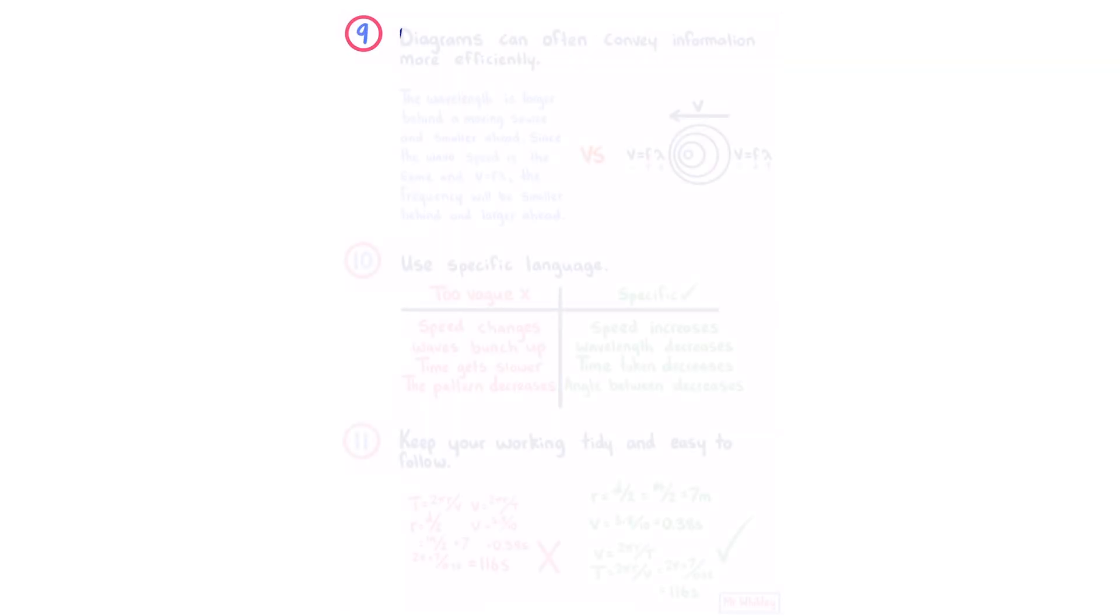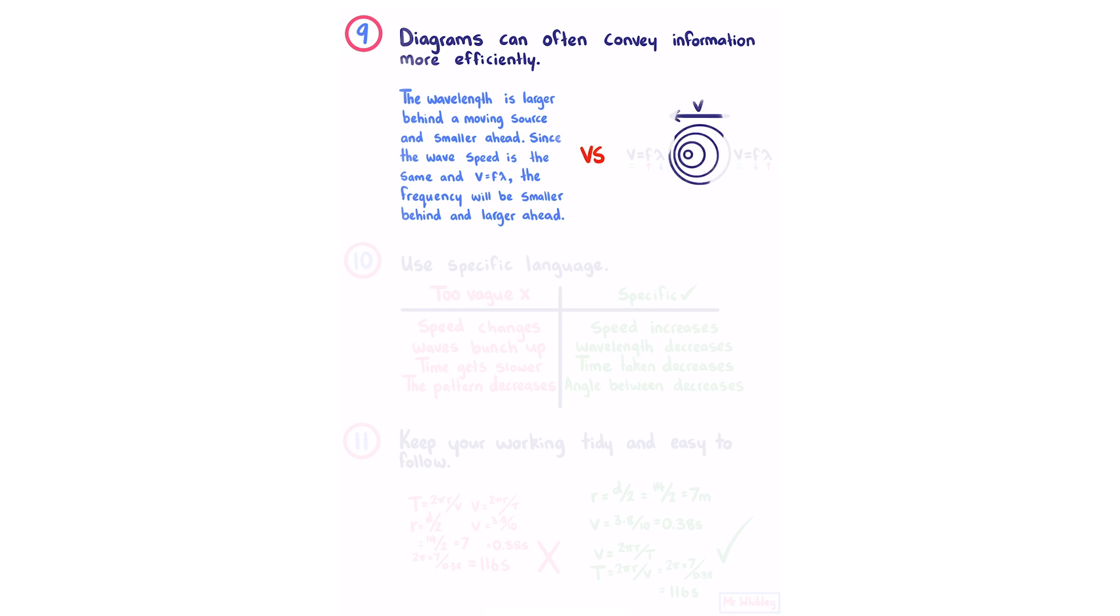Number nine, diagrams can often convey information more efficiently. We could say the wavelength is larger behind a moving source and smaller ahead. Since the wave speed is the same and v equals f lambda, the frequency will be smaller behind and larger ahead. Or we could draw a diagram and use annotated equations.